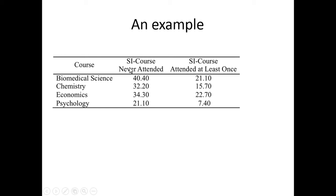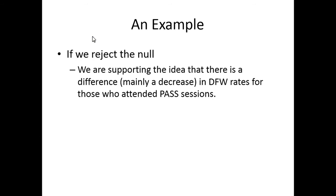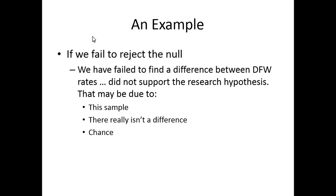I would reject the null, it was significant. If I rejected the null, I'm supporting the idea there's a difference in DFW rates for PASS, and mainly it's a decrease just looking at the results. I predicted something would happen, and then I looked at it and said the scores are going down, that's good in this case. If I had failed to reject the null though, I failed to find a difference, so I don't support the research hypothesis. But that may be because the sample is weird, maybe we had a semester that the sample was strange. Maybe there really isn't a difference between people who go and people who don't go, and maybe it's chance. There's always that little bit of chance, the catch-all phrase for random things that happen in life.